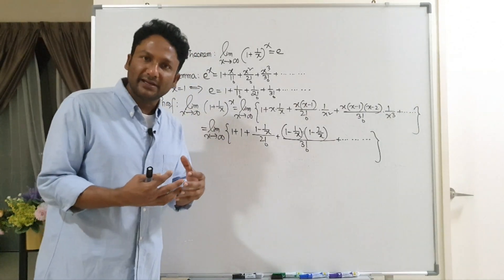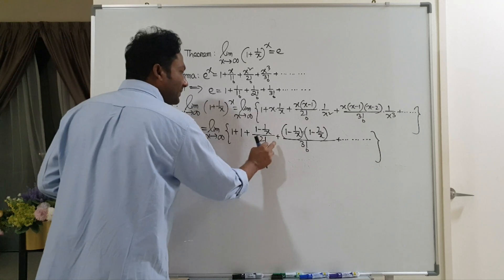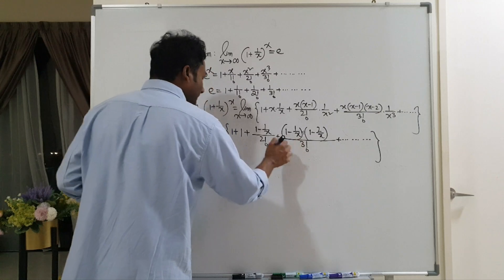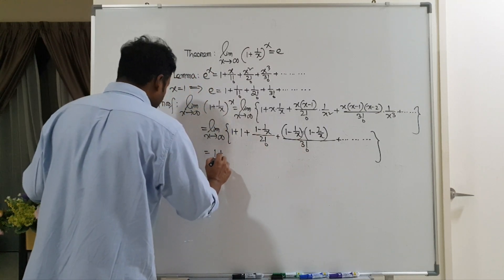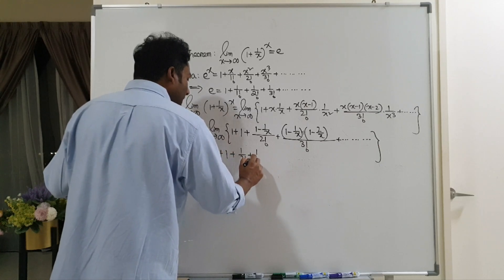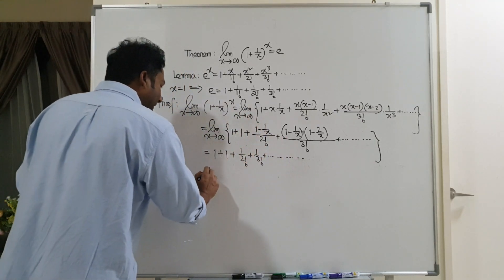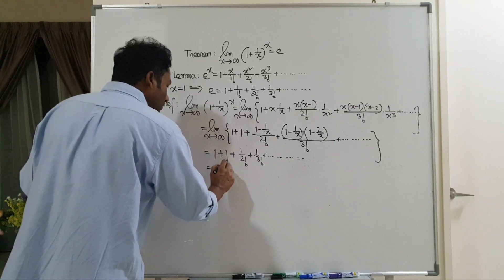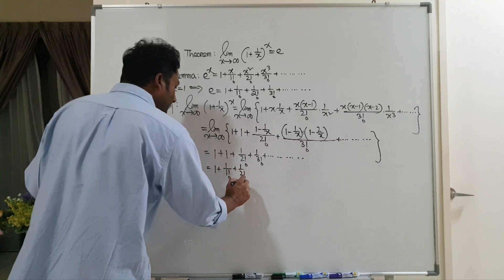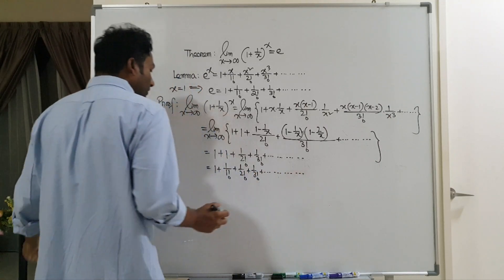Now we have x tends to infinity and we apply this limit. So 1 by infinity is 0, and 2 by infinity is 0. So we have 1 plus 1 plus 1 by factorial 2 plus 1 by factorial 3 plus dot dot dot. That is, 1 plus 1 by factorial 1 plus 1 by factorial 2 plus 1 by factorial 3 plus dot dot dot.